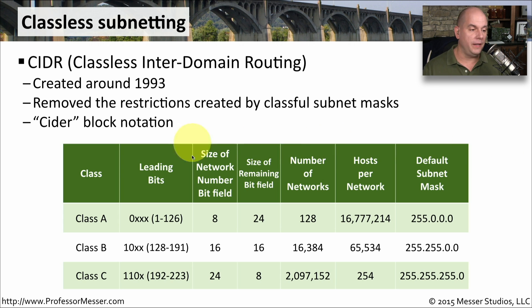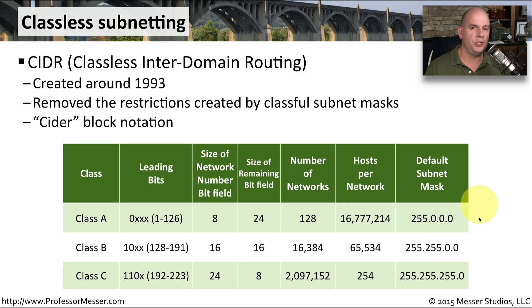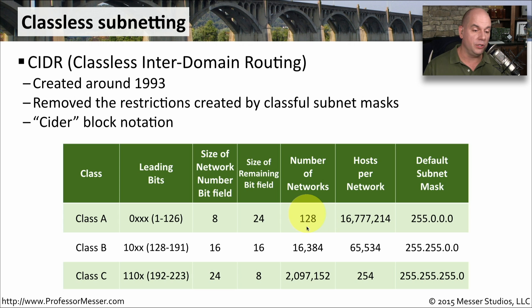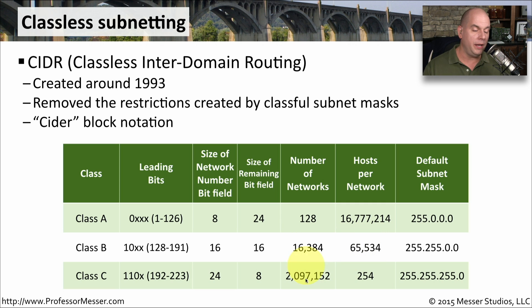If you recall from one of our previous videos, we have a Class A, a Class B, and a Class C set of addresses, and the default subnet masks you can see here. In this class-based subnetting, you could choose one of these three classes to define how big or small you wanted your network to be subnetted, which means you could either have with Class A 128 networks that would have 16 million plus hosts per network, 16,000 or so networks with 65,000 hosts per network, or 2 million networks but only 254 hosts on a single network.